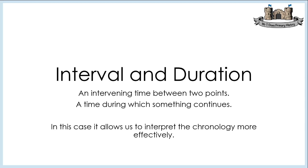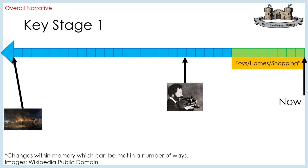Let's start with Key Stage 1. Here you can see the overall narrative timeline. The scale is in decades, which allows the children to count back and identify the intervals between the years. You can see that 'changes within living memory' is depicted as a bar, therefore it's showing a duration of time.